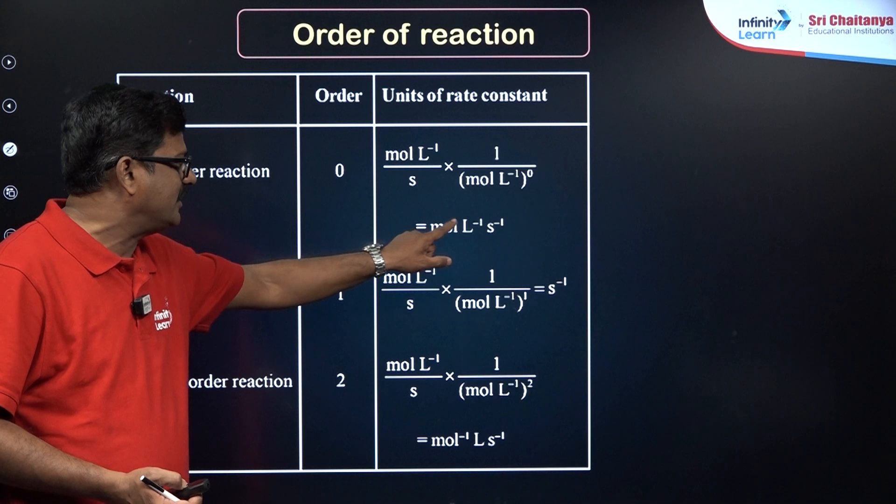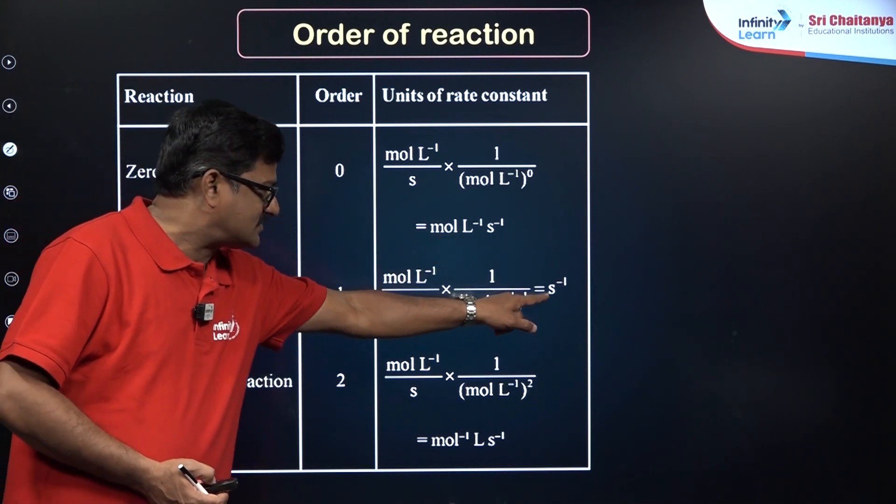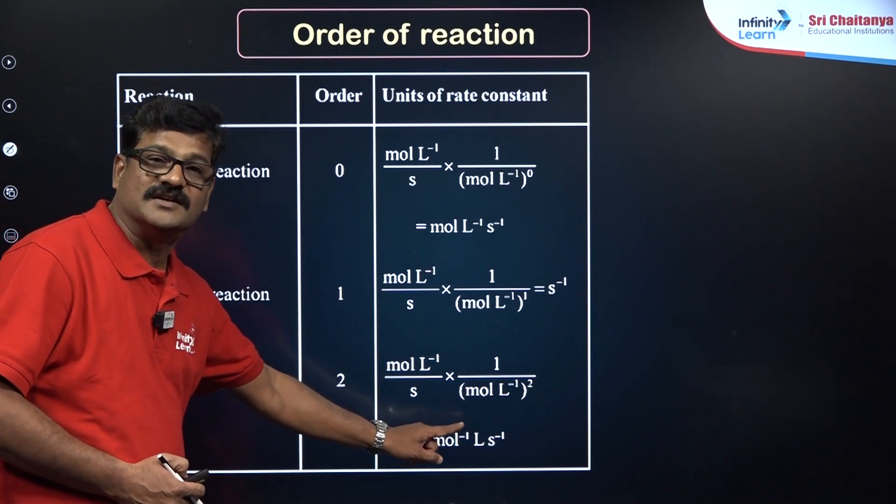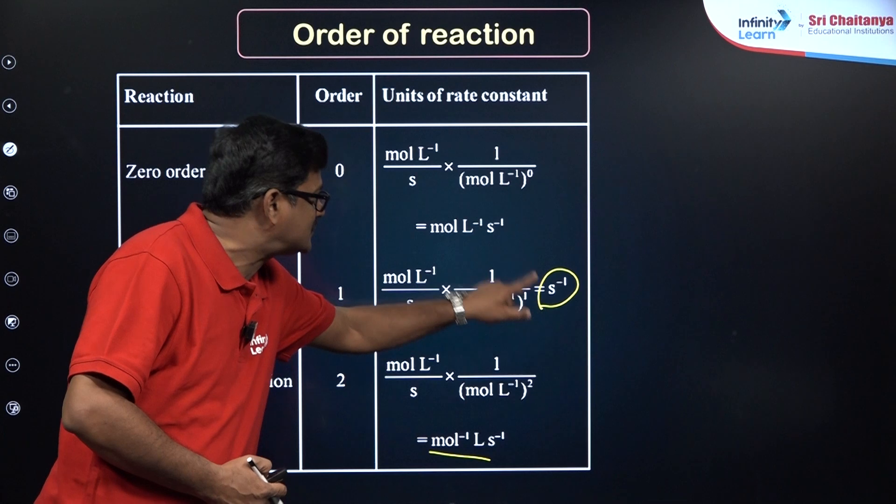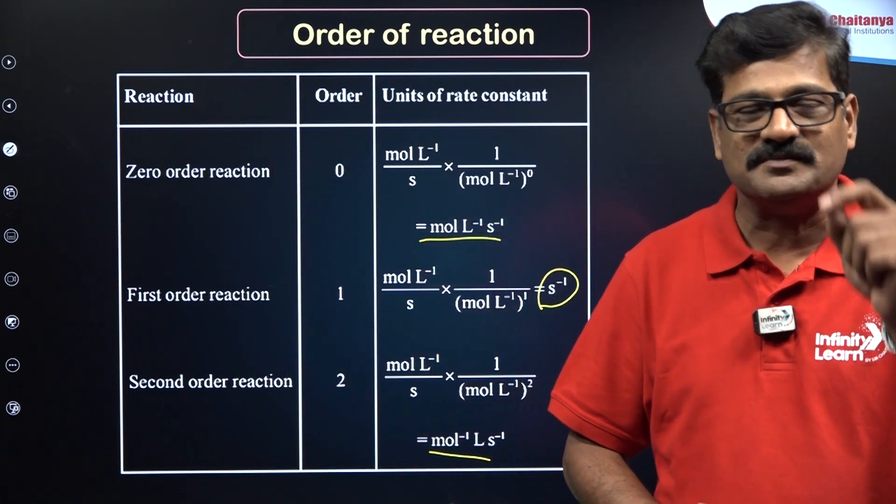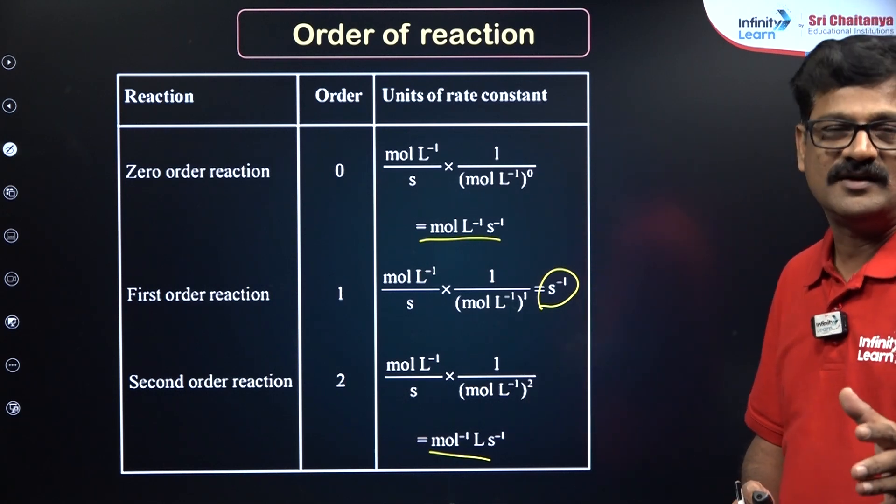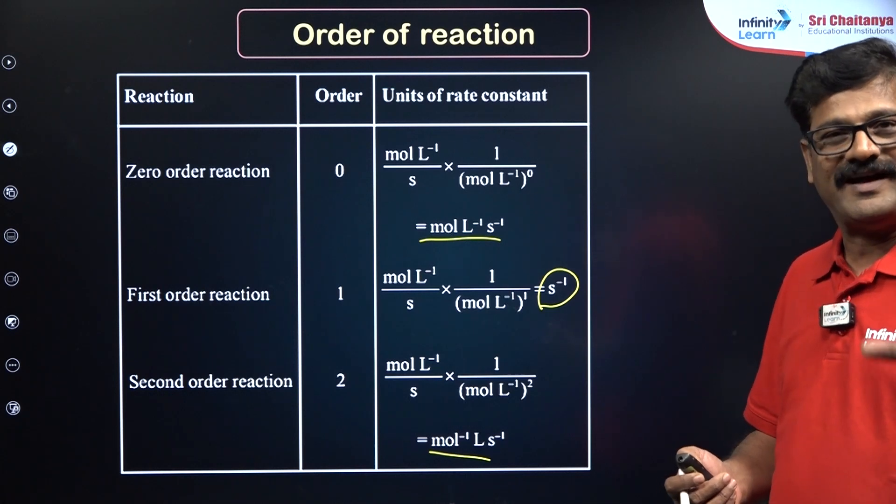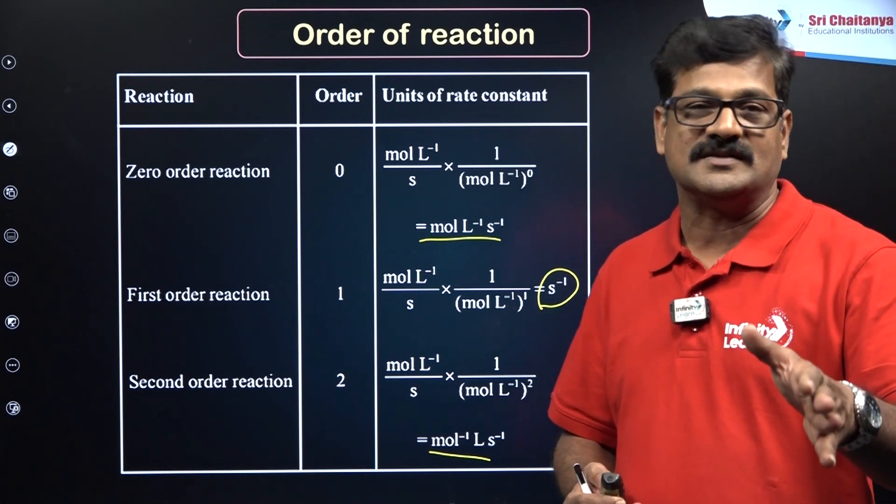Based on this, you can have the rate constant for various orders. For zero order: mol L^-1 s^-1. For first order: s^-1. For second order: mol^-1 L s^-1. Based on these units, you will have one multiple choice question from the NEET examination. It is simply analytical. By looking at the dimension of K, you can say what is the order of a reaction.